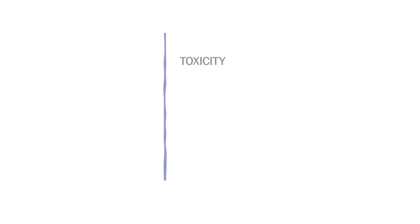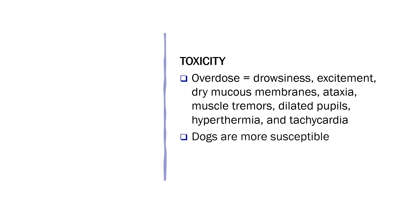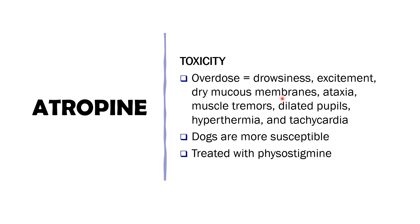Atropine toxicity: atropine can cause drowsiness during overdose because it crosses the BBB. It can also cause excitement for the same reason, as well as dry mucous membranes, ataxia, muscle tremor, dilated pupils or mydriasis, hyperthermia due to its central anticholinergic effect, and tachycardia. Dogs are more susceptible to atropine toxicity and this can be treated with physostigmine.